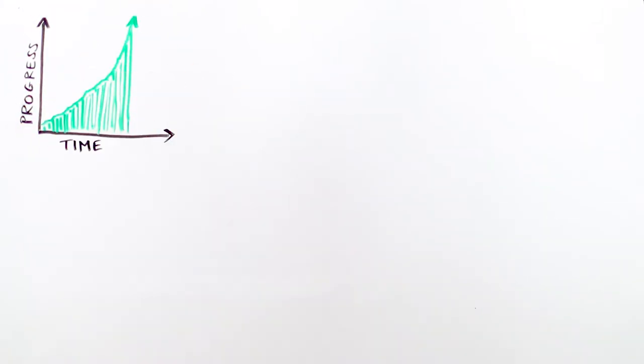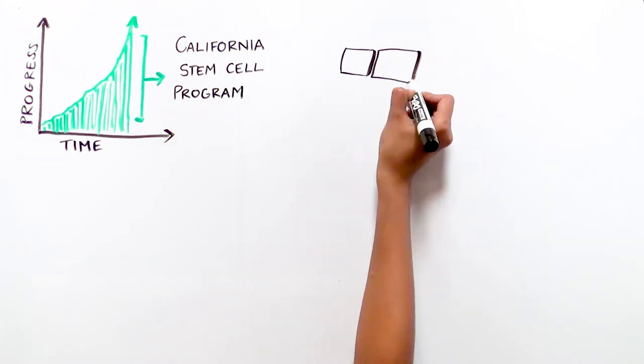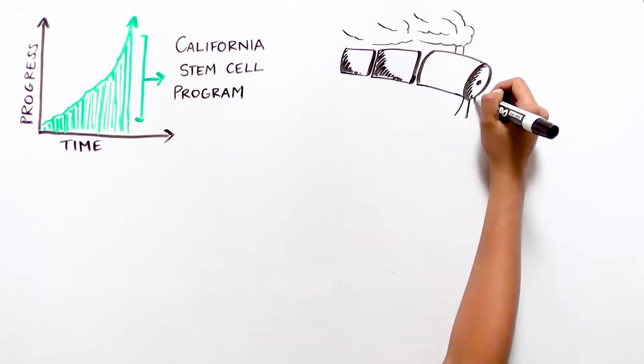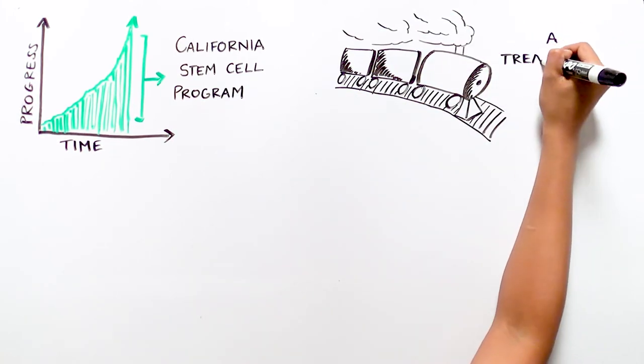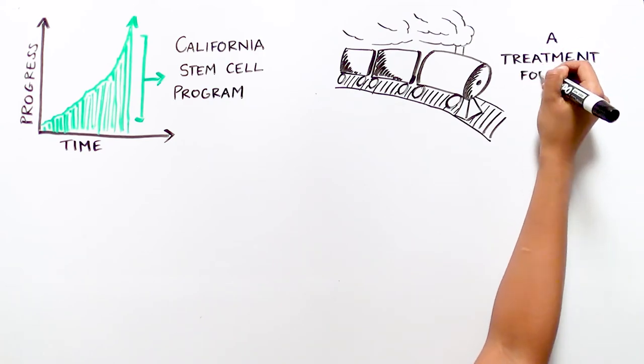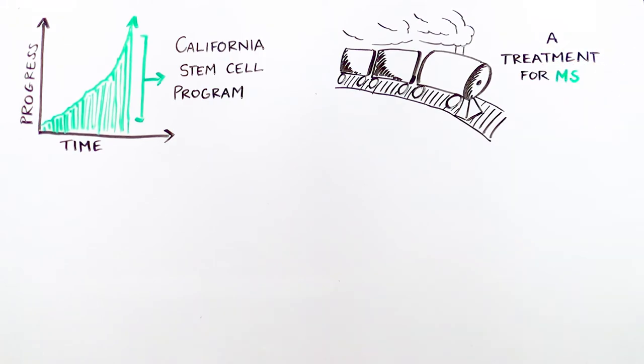As we build on the progress enabled by California's stem cell research and therapy development program, we must keep the momentum going. We now have more advanced tools to develop better ways to treat devastating autoimmune diseases, such as MS.